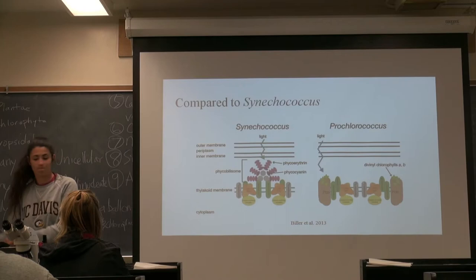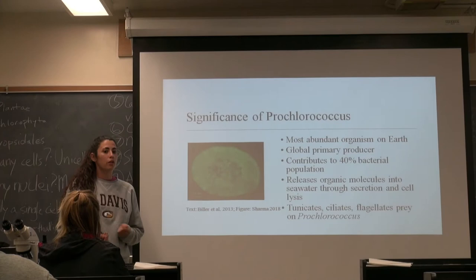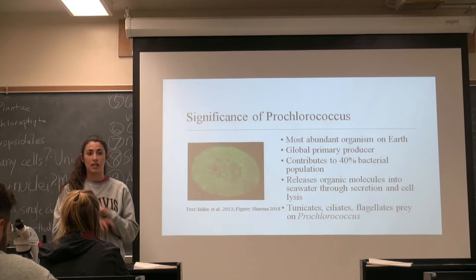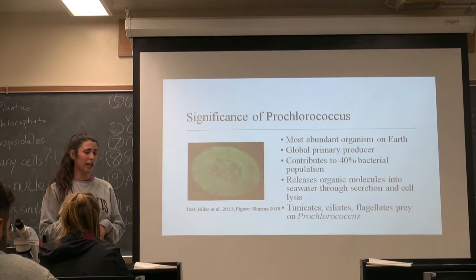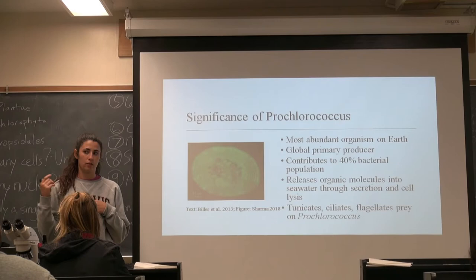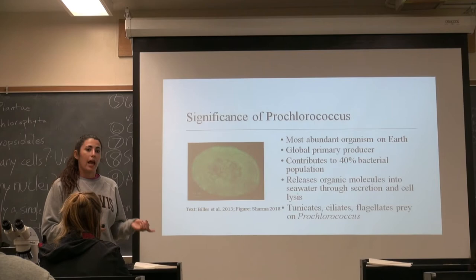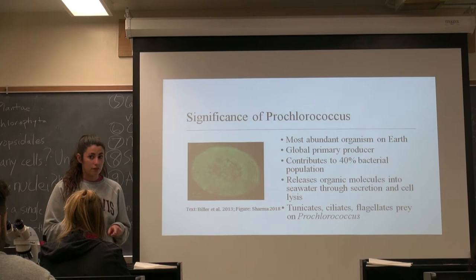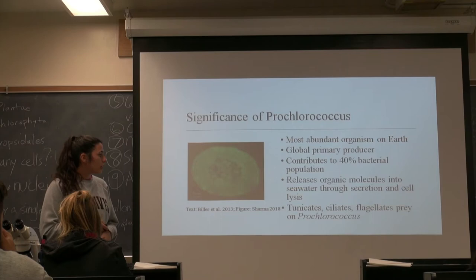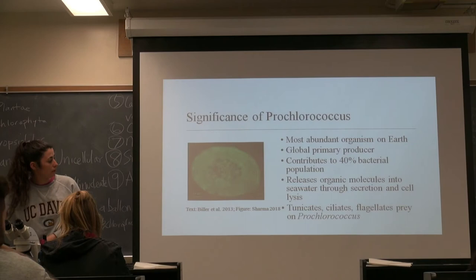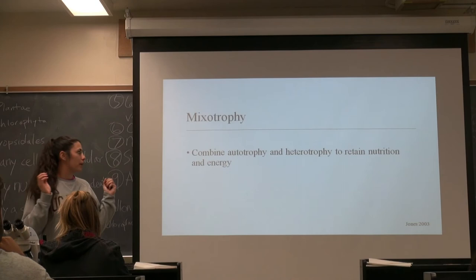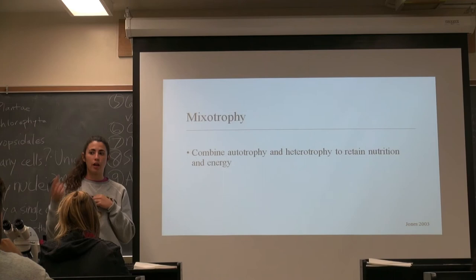So significance: it's one of the most abundant organisms on Earth. It actually produces about 50% of chlorophyll in the vast surface of the ocean. It's a global primary producer and contributes to about 40% of the bacterial production of bacteria that produces carbon. It releases organic molecules into the seawater through secretion and the lysing of their cells. They also are preyed upon by tunicates, ciliates, and flagellates, as well as some other types of species. They actually practice mixotrophy, which is a combination of autotrophy and heterotrophy — so they use heterotrophy as consuming other organisms, as well as photosynthesis.